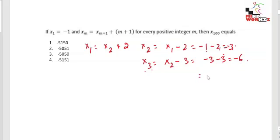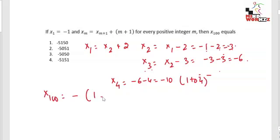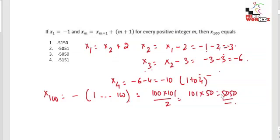The pattern shows: x₂ = -3 is the negative sum of natural numbers up to 2; x₃ = -6 is the negative sum up to 3; x₄ = -6 - 4 = -10, the negative sum up to 4. So x₁₀₀ equals the negative sum of natural numbers from 1 to 100, which is -(100 × 101 / 2) = -(101 × 50) = -5050. The answer is option 3, -5050.